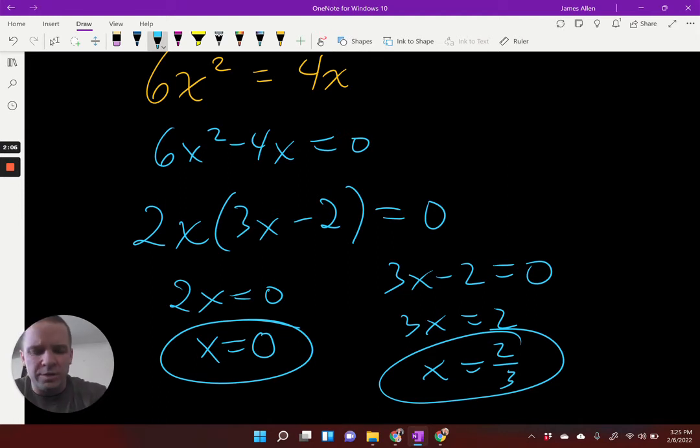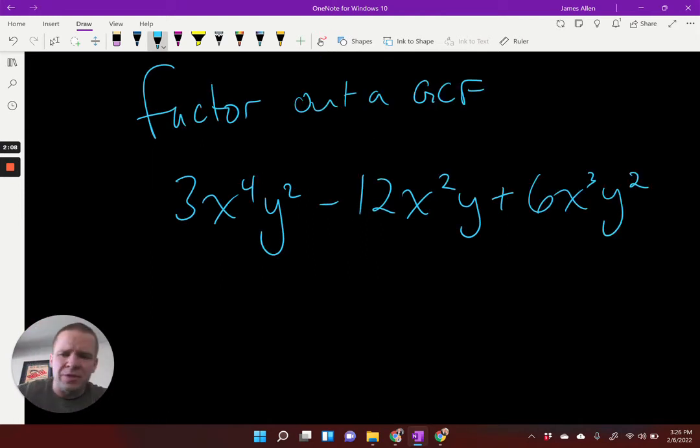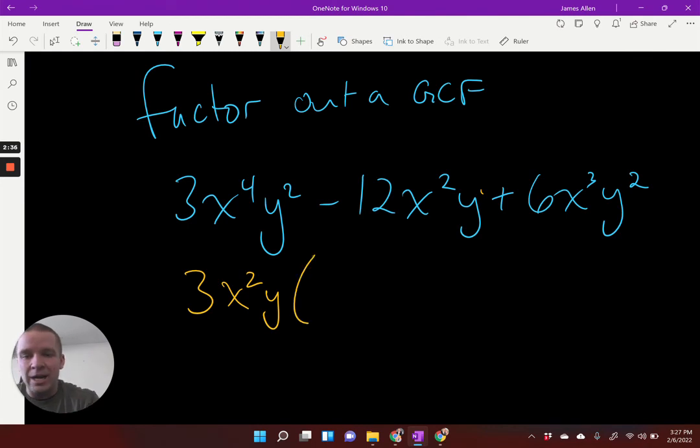All right, I think we got one more style. All right, we're going to factor out a GCF for this one. This is not a solving situation. We got two different variables, right? We're just going to factor out our GCF. So if we look at each individual term, look at each individual term here. I've got 3, 12, and 6. Biggest number, largest number I can take out is a 3. Now I'm going to look at my x's. I got x to the fourth, x squared, and x to the third. The most I can take out would be an x squared. Now my y's. I got y squared, y to the first, right? This is y to the first right there, and y to the second, so it's just y that I can take out.